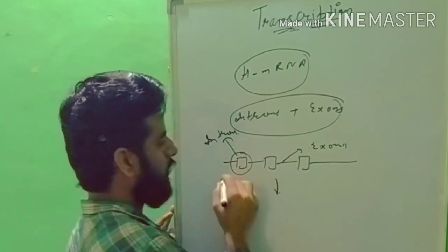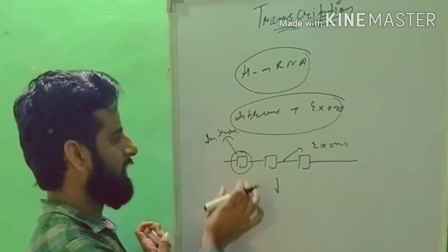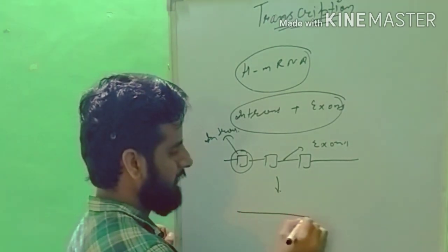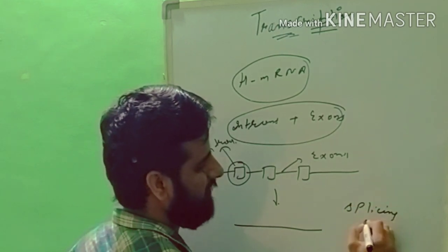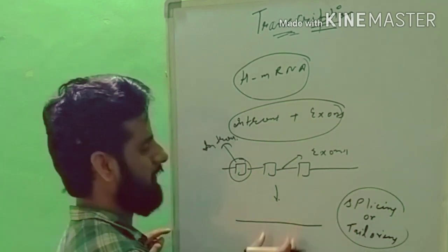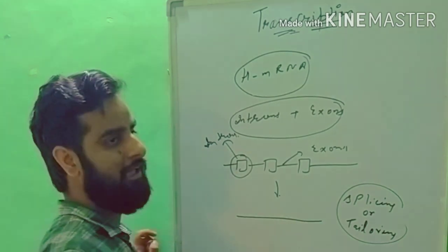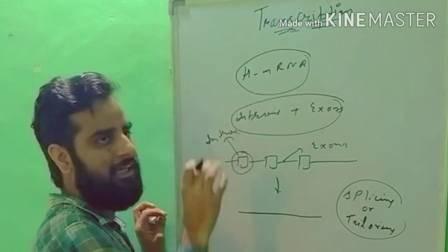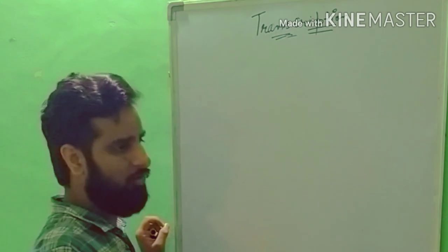Suppose this is the mRNA molecule: these are the introns, which are blank spaces, and these are the exons. The introns are removed by restriction endonuclease enzymes. Then the exons are joined together with the help of enzymes. The introns are removed so the mRNA can be directly used, but only after this modification.